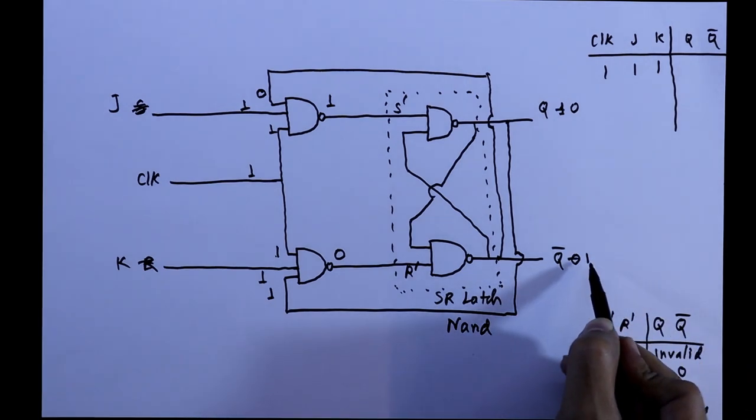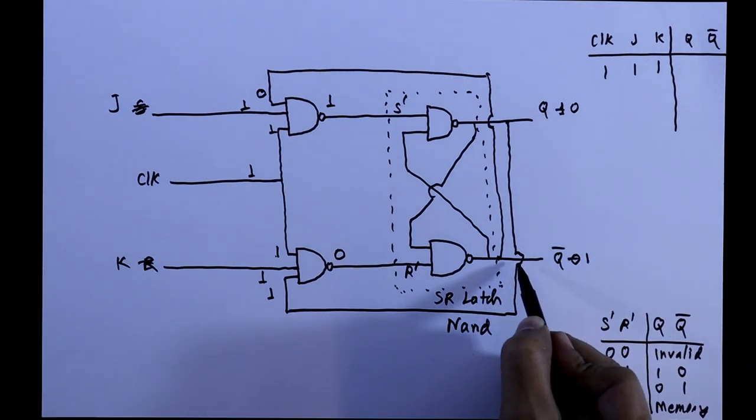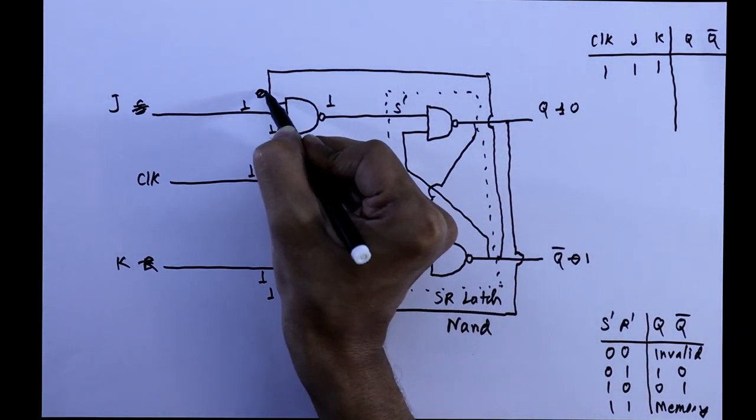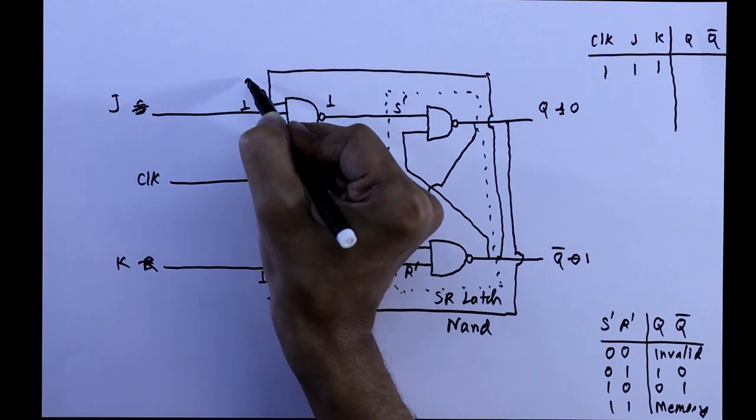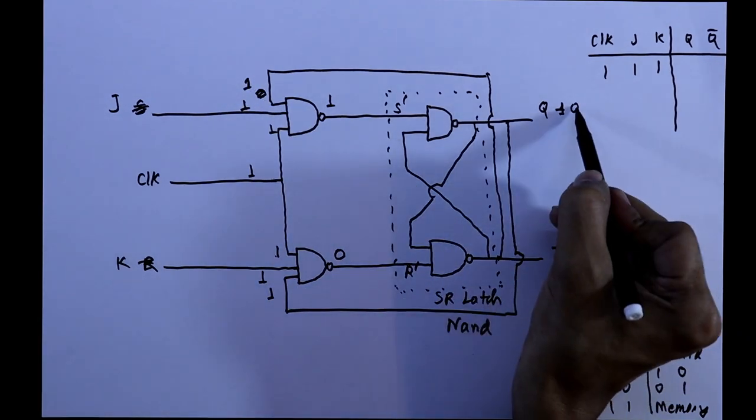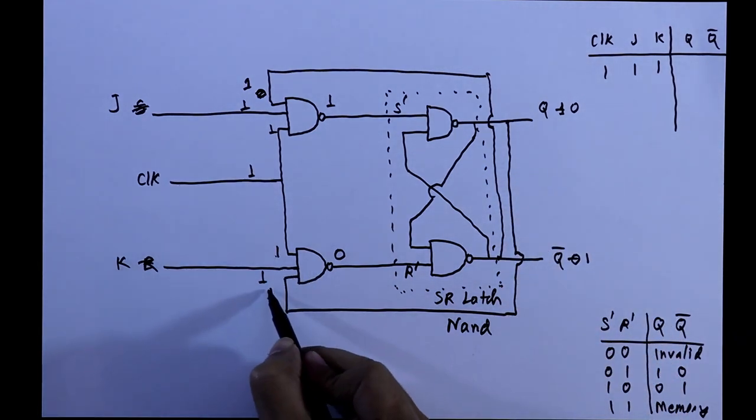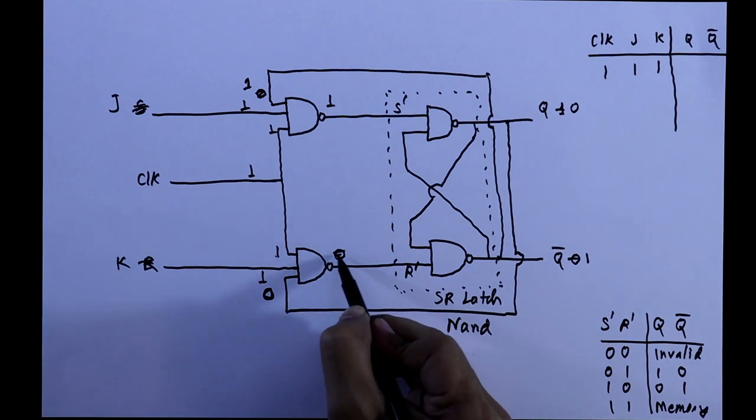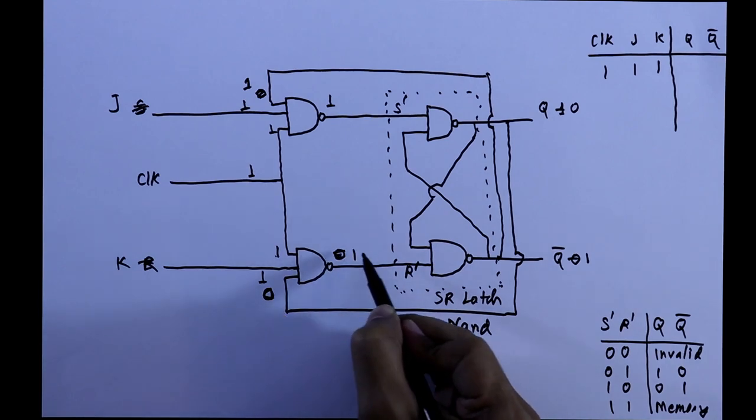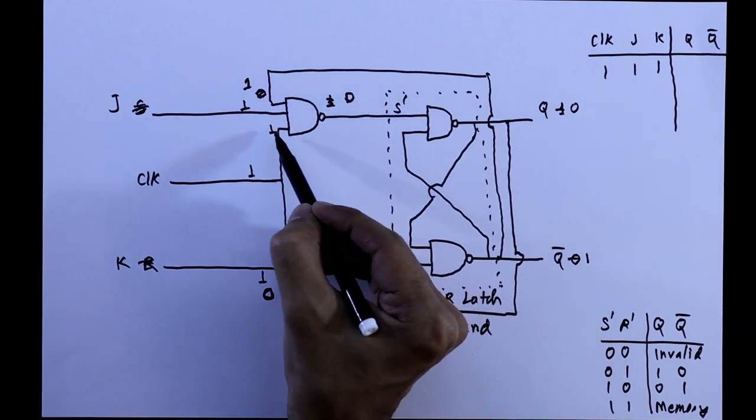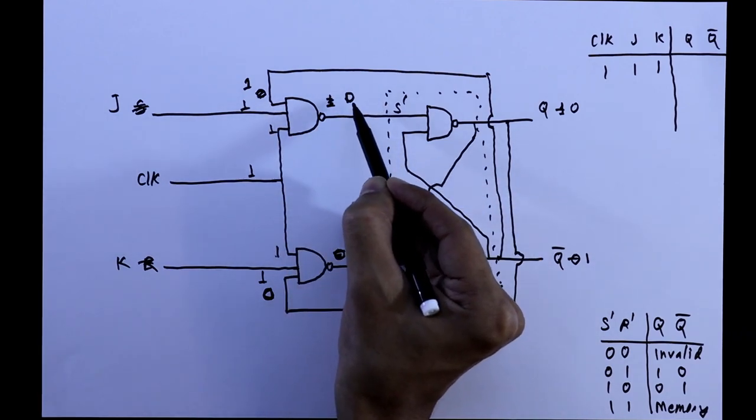As Q bar is 1, so this time this 1 is connected to this NAND gate as an input and now it is 1. 3 inputs is 1 and in this NAND gate this 0 is connected to input and we will get this input as 0. So at this time this output will be 1 and this 1 will be 0. 3 inputs of NAND gate is 1, so output is 0.